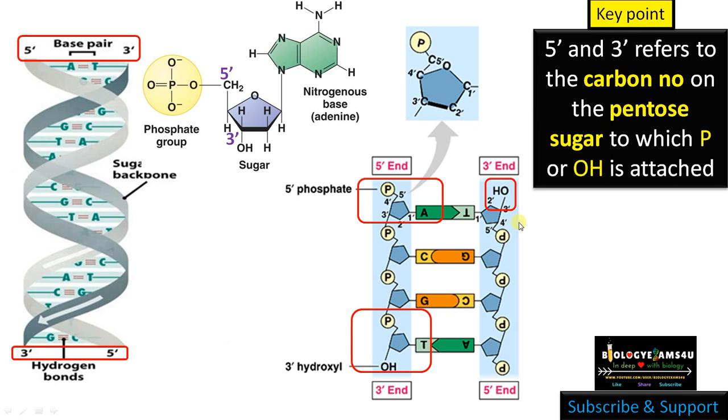In the second strand, as you can see, the upward end is having 3 prime OH group, whereas the bottom end is having the 5 prime phosphate group, making it anti-parallel. One strand runs in 5 prime to 3 prime direction, whereas the second strand runs in 3 prime to 5 prime direction.